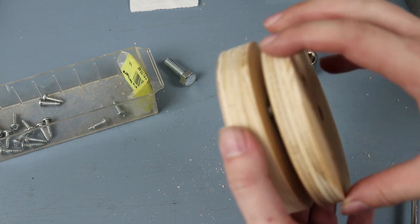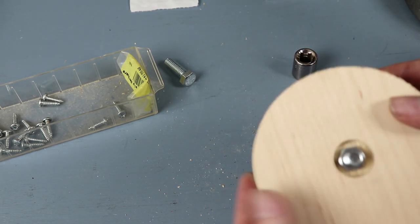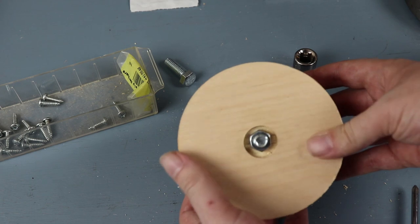Here's my turntable all put together. The T-nut is on the bottom and it will mount to the tripod legs, and the bolt is on the top and it will mount to the camera boom.